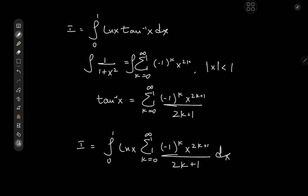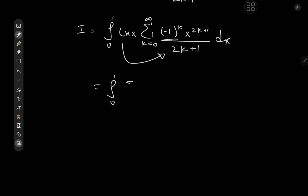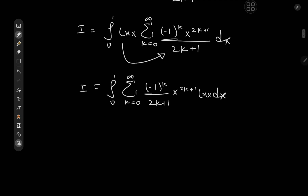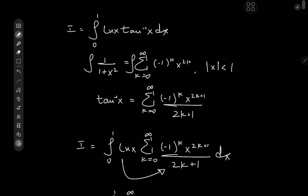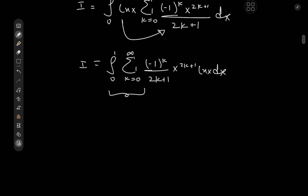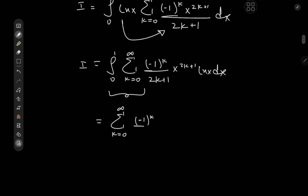The log(x) term is independent of the index variable k, so we take it inside the summation and get the integral from 0 to 1 of the sum over k from 0 to infinity of (−1)^k over (2k+1) times x^(2k+1) times log(x) dx. Switching the order of integration and summation is justified since the integral converges — it's the integral of a bounded function over a bounded interval. So we get the sum over k from 0 to infinity of (−1)^k over (2k+1) times the integral from 0 to 1 of x^(2k+1) times log(x) dx.